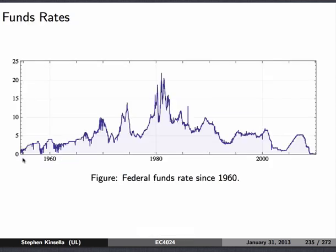You can see here the Fed funds rate since 1960. It starts off pretty low, gets pretty high in the 1980s, then drops right down to zero or very close to zero. In the 2000s, the Fed is at what's called the zero lower bound for obvious reasons, and it's one of the reasons that people like Paul Krugman talk about the necessity for fiscal policy in these situations.